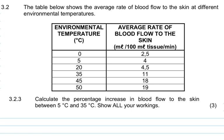Now there's all kinds of other questions that they're asking in the meantime but we are only focusing on question 3.2.3 which says calculate the percentage increase in blood flow to the skin between 5 degrees celsius and 35 degrees celsius. Show all your workings.